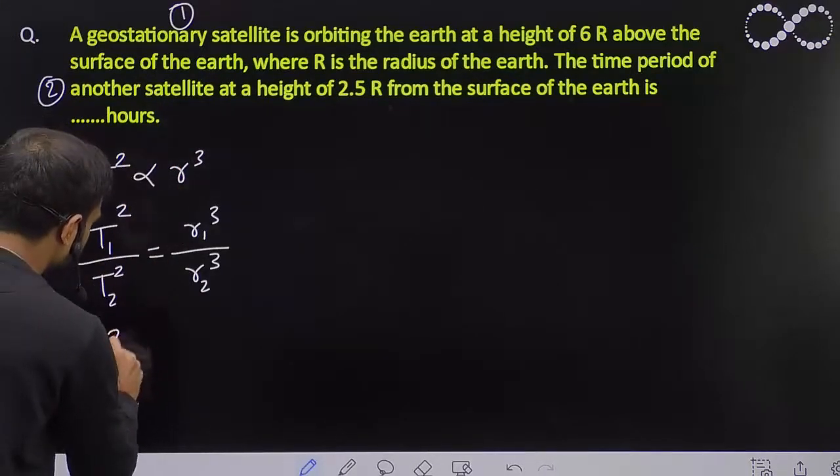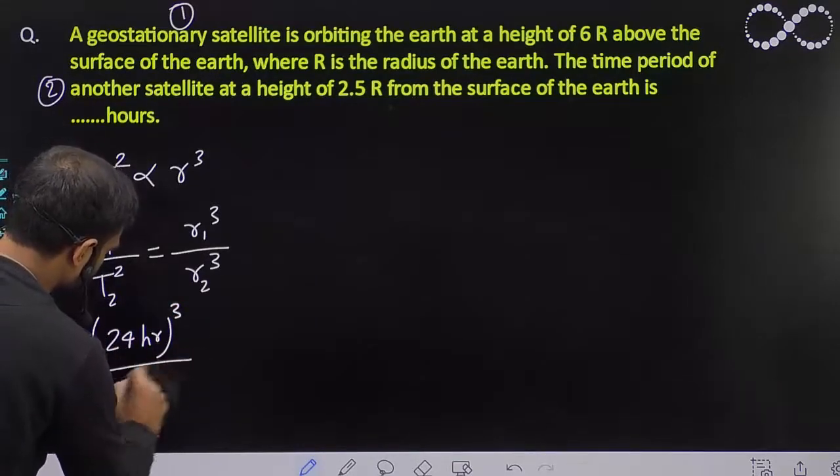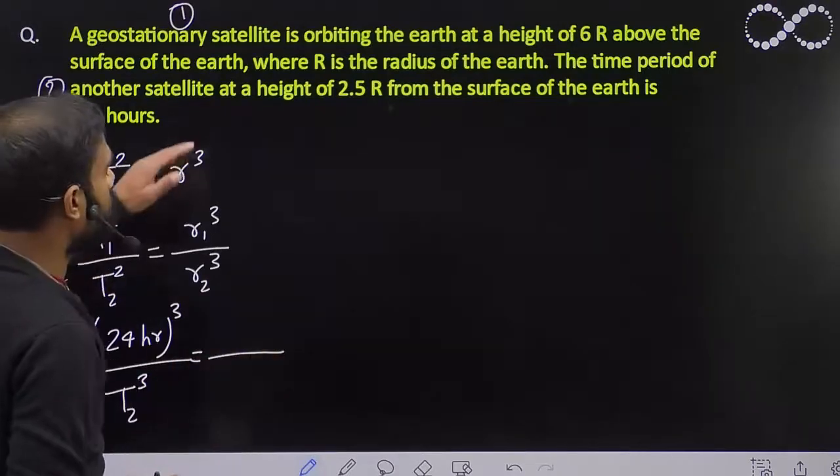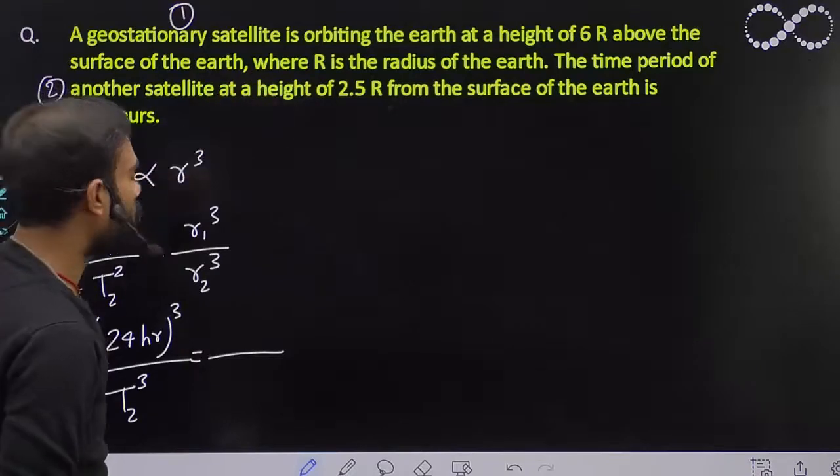That will be 24 hours and this will be... the radius of geostationary satellite, the height is 6R. So 6R plus the radius of Earth, that will be 7R.